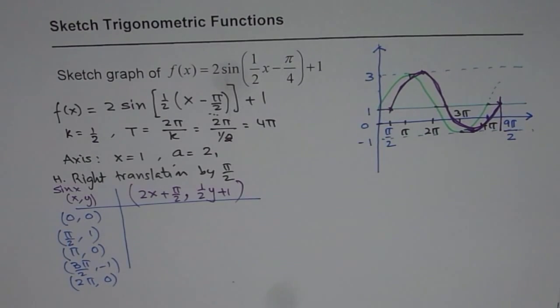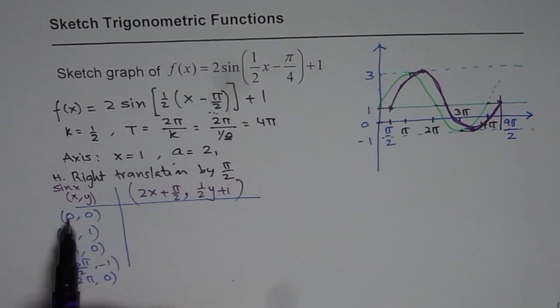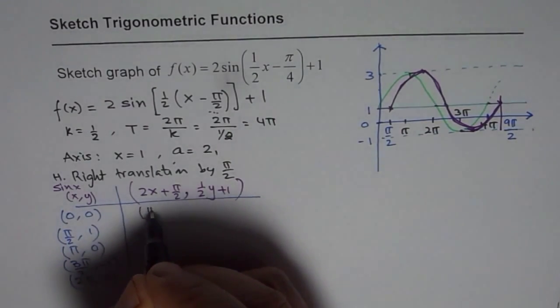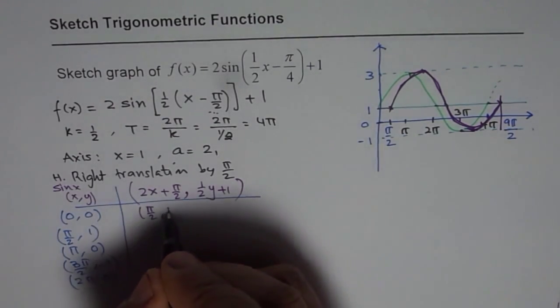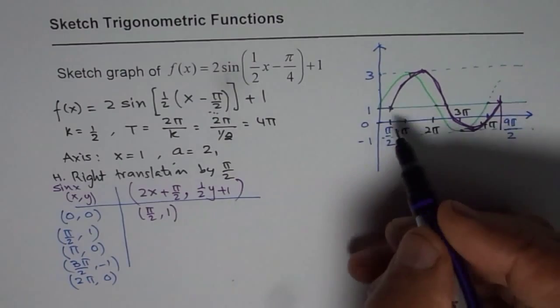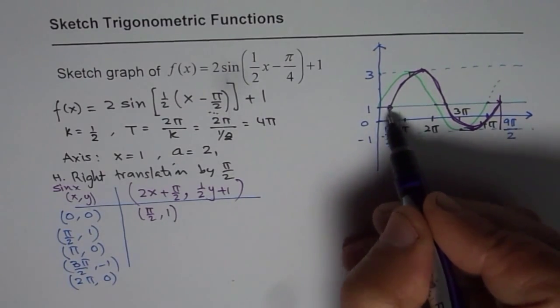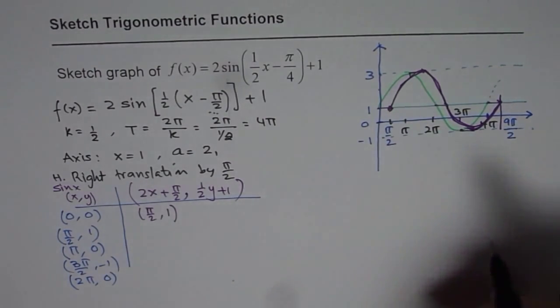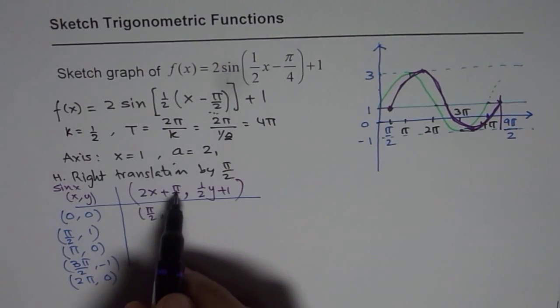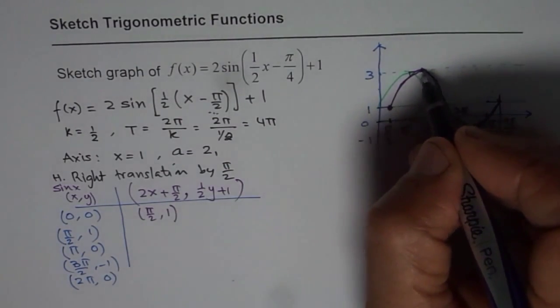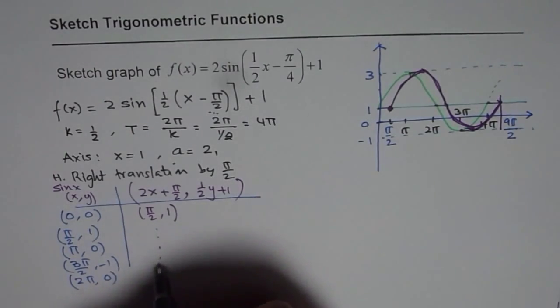So what you can do is you can start with the key values. This is using the key values. And zero if you put here you get pi by 2 to start with. So you get pi by 2 replacing x with zero. And replacing y with zero you get one. So at pi by 2 you have one. So that is how you get the first point. And then you can replace this x by pi by 2 and get the next point. So likewise you can fill this table.